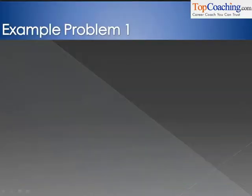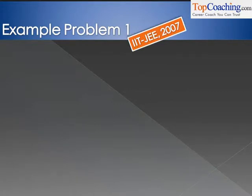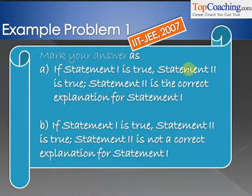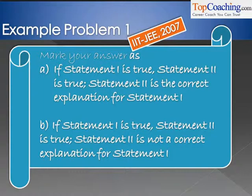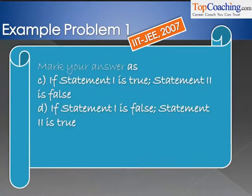Now that we've studied the three laws of motion, why not solve an IIT JEE problem? This one was asked in IIT JEE 2007. For more IIT JEE problems and competitive examination problems, you can always attempt the test at topcoaching.com's physics section. The question stated that we had to mark our answer as A if statement one is true, statement two is true, and statement two is the correct explanation for statement one. B if statement one is true, statement two is true, and statement two is not a correct explanation for statement one. C if statement one is true, statement two is false.